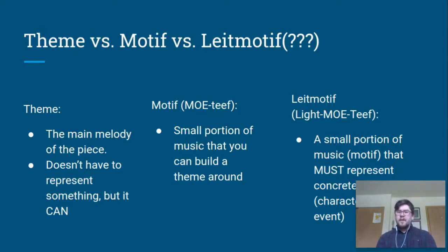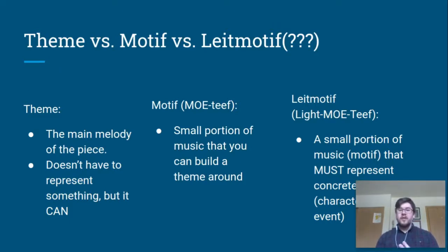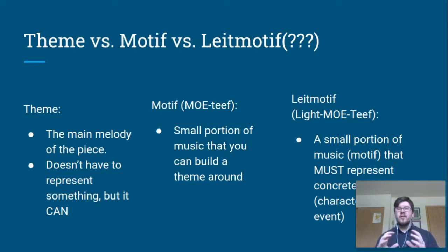A leitmotif is the most specific one. It's similar to a motif in that it has to be a small portion of music, but it must represent something concrete in the narrative — meaning it has to represent either a person, a place, an event, or an emotion. That's its purpose: to represent a certain concrete idea.